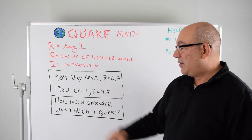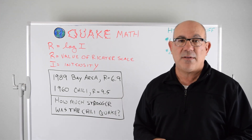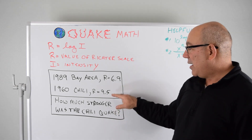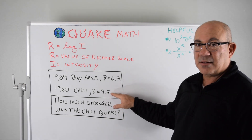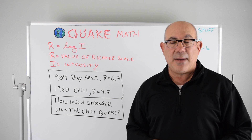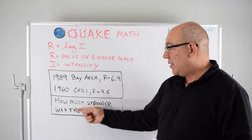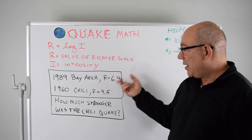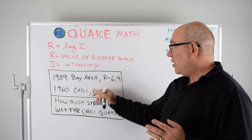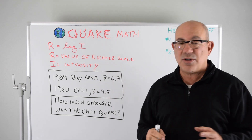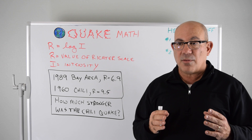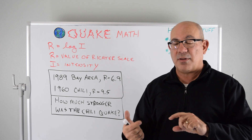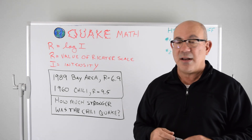In 1960 we had the most violent quake the world has ever recorded. What we want to know is how much stronger was the 1960 quake compared to the one that happened in 1989. We can't just subtract or divide 6.9 and 9.5 directly, because the Richter scale — which is what we use to measure the strength of earthquakes — is a logarithmic scale. You have to actually solve out the logarithm and then divide by the intensity.